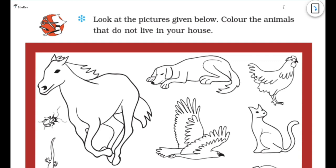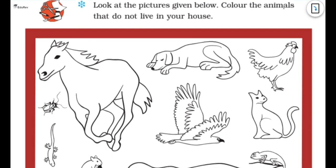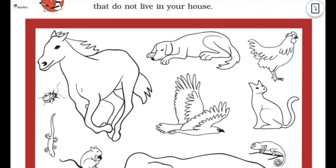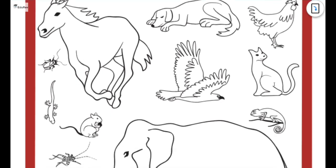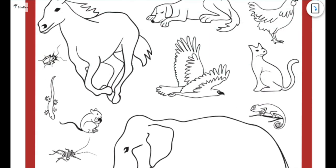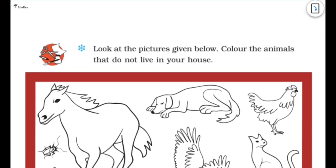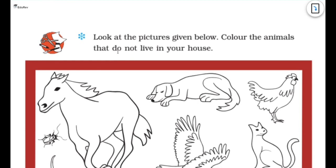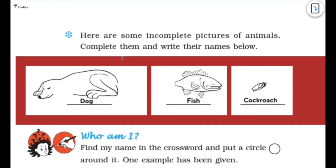So look at the pictures given below. Color the animals that do not live in our house. So we have to basically color the animals that do not live in our house. I think most of us might not have horse at their place. People might have dogs. They might not have eagle. But they might have this cat, little pretty cat here. They might have this lizard, rats. They might not or may have grasshoppers. They might not have cockroaches. Some may have. Elephants won't be there. Some might have aquariums. So actually, what you can do is you can color the ones that live in your place and just actually you have to color the ones that do not live at your place.